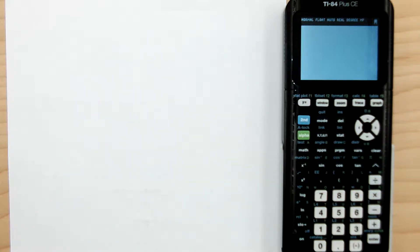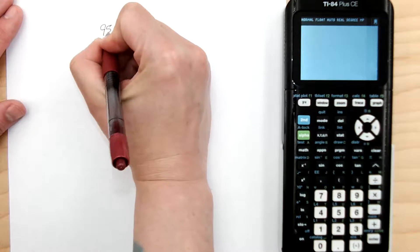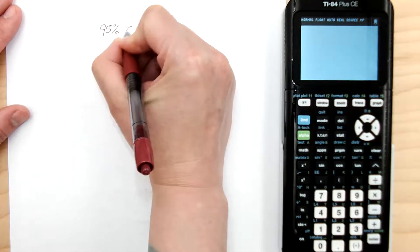This is a video for using the inverse distribution buttons on your calculator. This is used for confidence intervals, finding your z and t score. So let's say I've got a 95% confidence level.